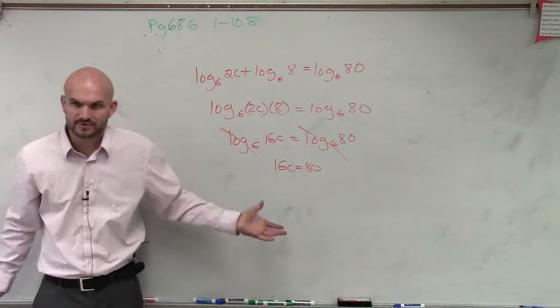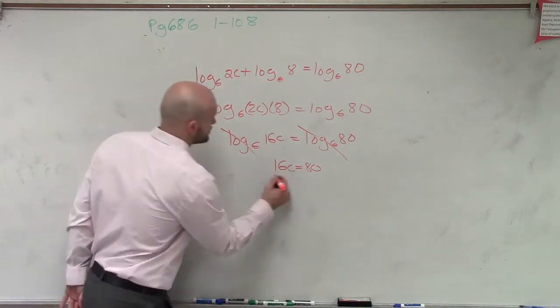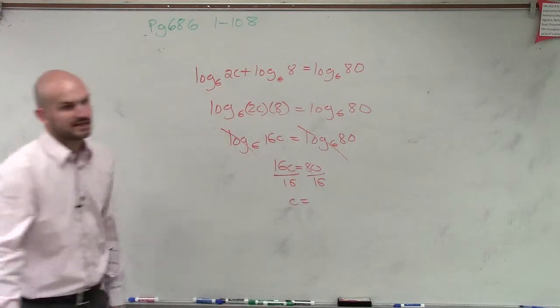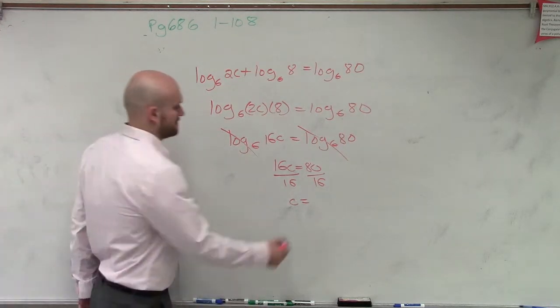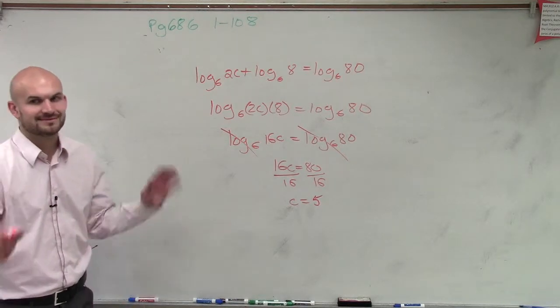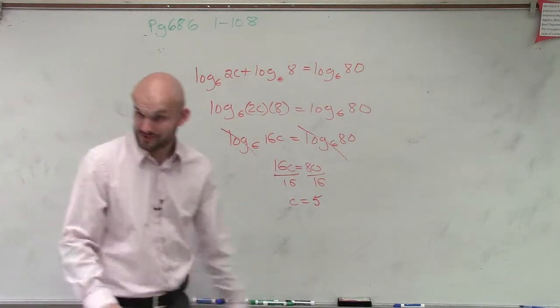So now we can solve for this, right? Divide by 16, c is going to equal 5. And there you go. Ta-da. Oh, it's easy now.